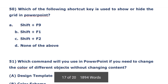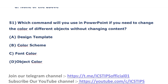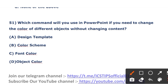The next question: which command will you use in PowerPoint if you need to change the color of different objects without changing the content? The options are Design Template, Color Scheme, Font Color, and Object Color. The right answer is option B — Color Scheme.